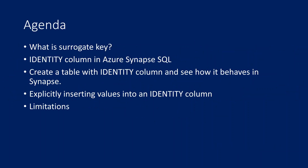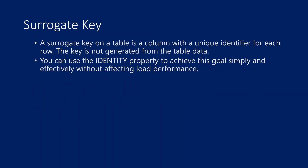We will be discussing what a surrogate key is if you don't know, and also discussing the identity column in Azure Synapse SQL. Then we will create a table with an identity column, see how it behaves, how to explicitly insert values into an identity column, and also cover a few limitations of using identity columns in Synapse.